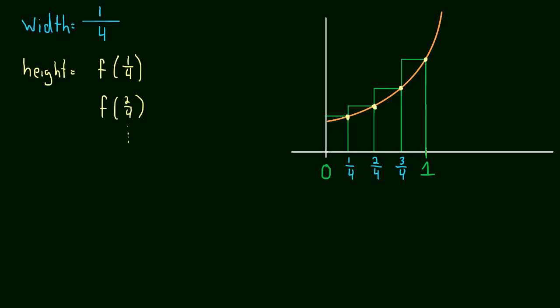And then the area is just going to be the height times the width. So the area of the first rectangle, for instance, is just going to be f of one-fourth times the width, which is just simply one-fourth. And this will be the area of the first rectangle. We can compute that, and then we add the area of the second rectangle, which is f of two-fourths times one-fourth, and then we'd add the area of the third rectangle, and so on. And this will be our estimate.